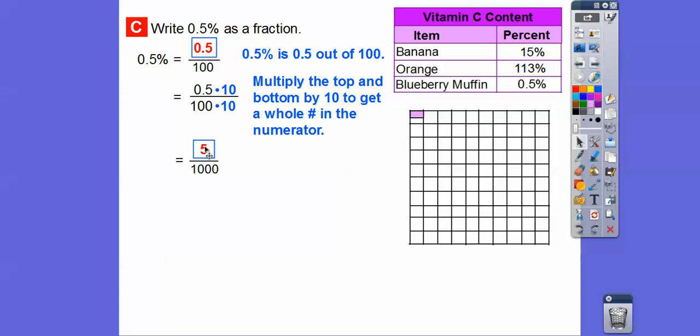And then let's reduce this. Yes, 5 goes into 5 once, 5 goes into 1,000. Well, it goes into 10 twice with two more zeros. So it's going to reduce to 1 over 200. So 0.5% as a fraction is 1 two hundredths.